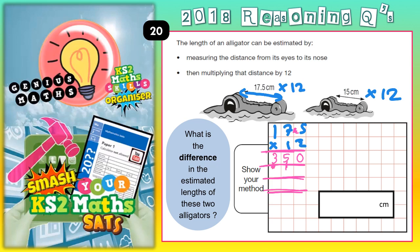Scribble out those carry digits because we've already used them — we don't want to use them again by accident. Now we're multiplying by this 1, but remember this 1 means 10. So times by 10 you put your magic zero in, then just times by 1: 1 times 5 is 5, 1 times 7 is 7, 1 times 1 is 1 — that's 1,750. Add your two answers together: 0 and 0 is 0; 5 and 5 is 10, put the 0 in, carry the 1; 3 and 7 is 10, plus 1 is 11, put the 1 in, carry the 1; 1 and 1 is 2. So that's 2,100 centimetres.